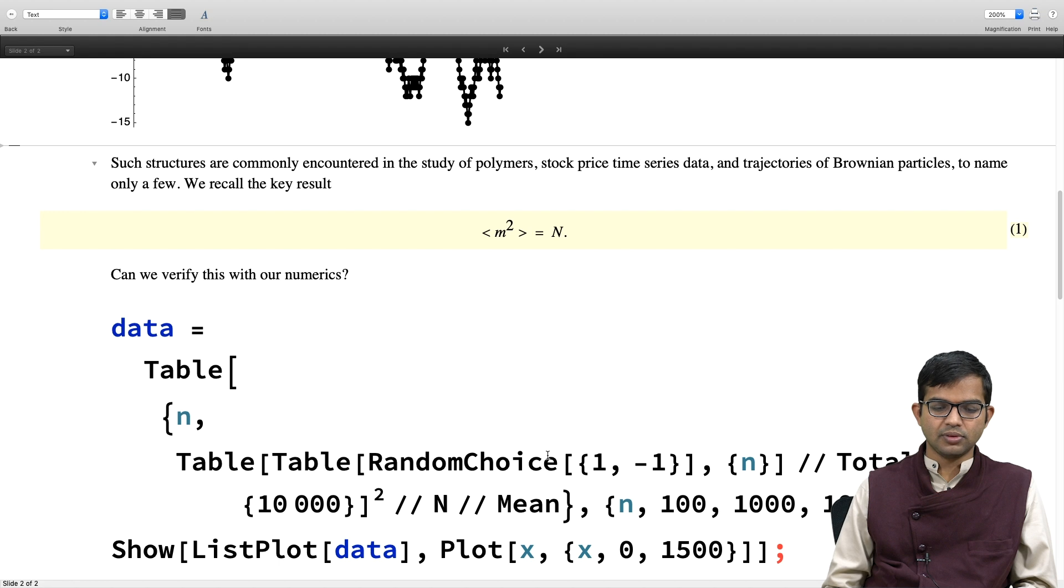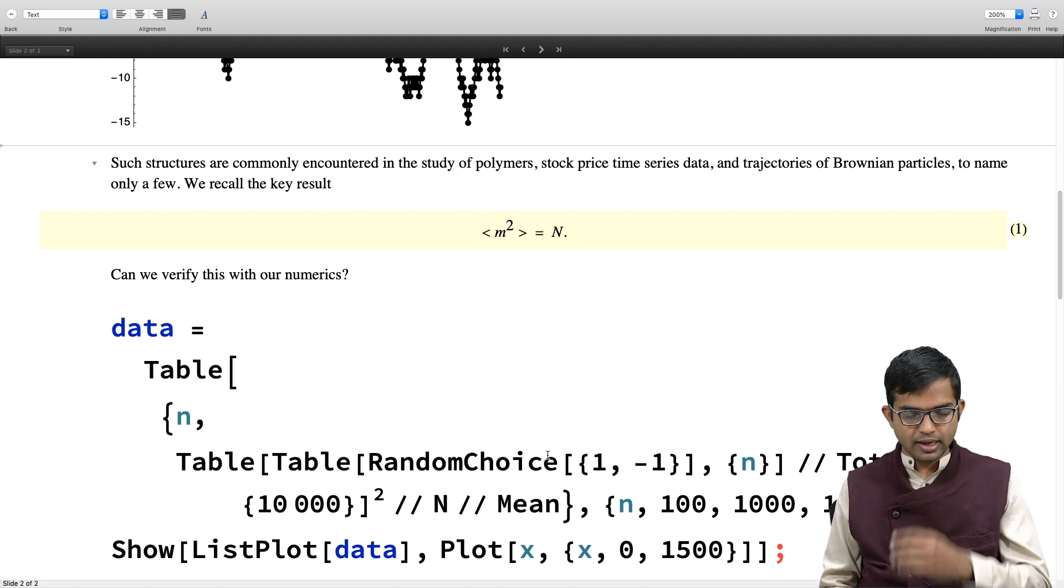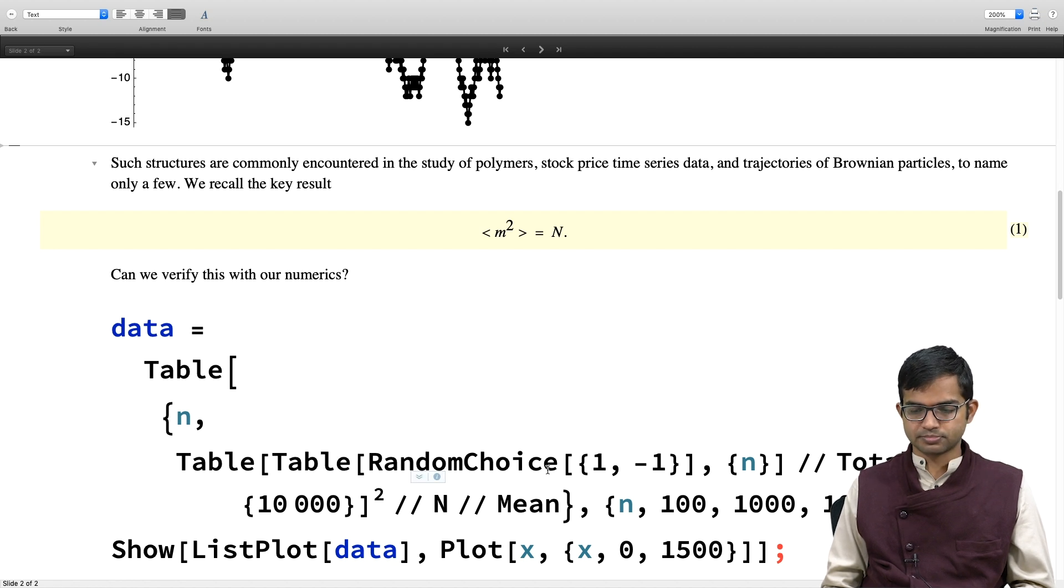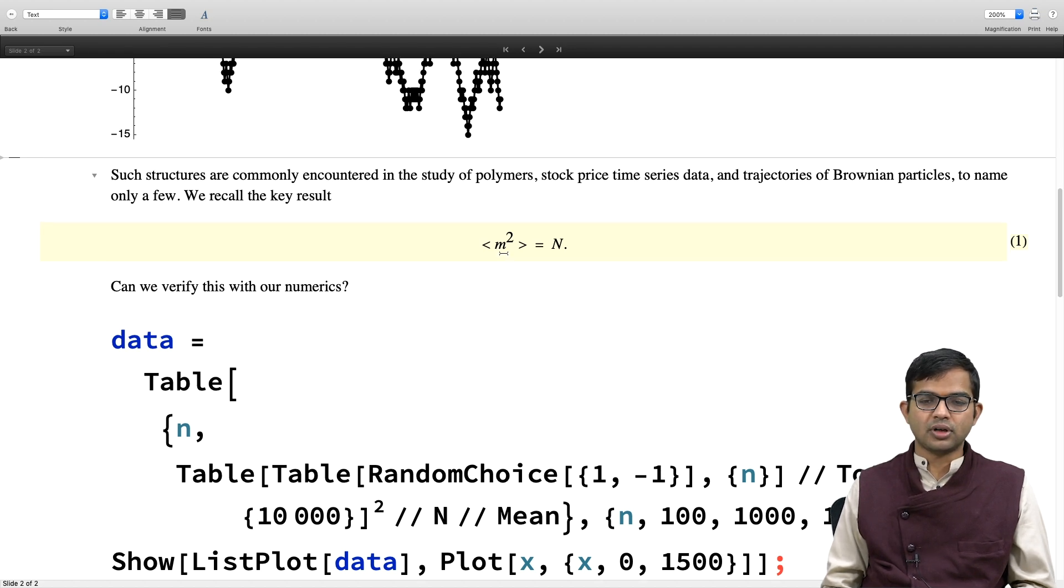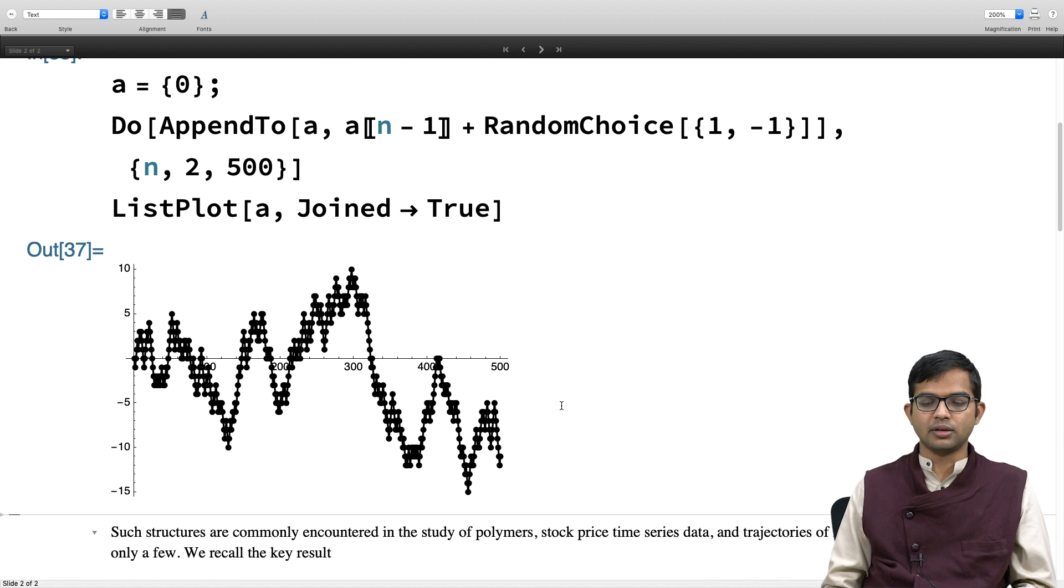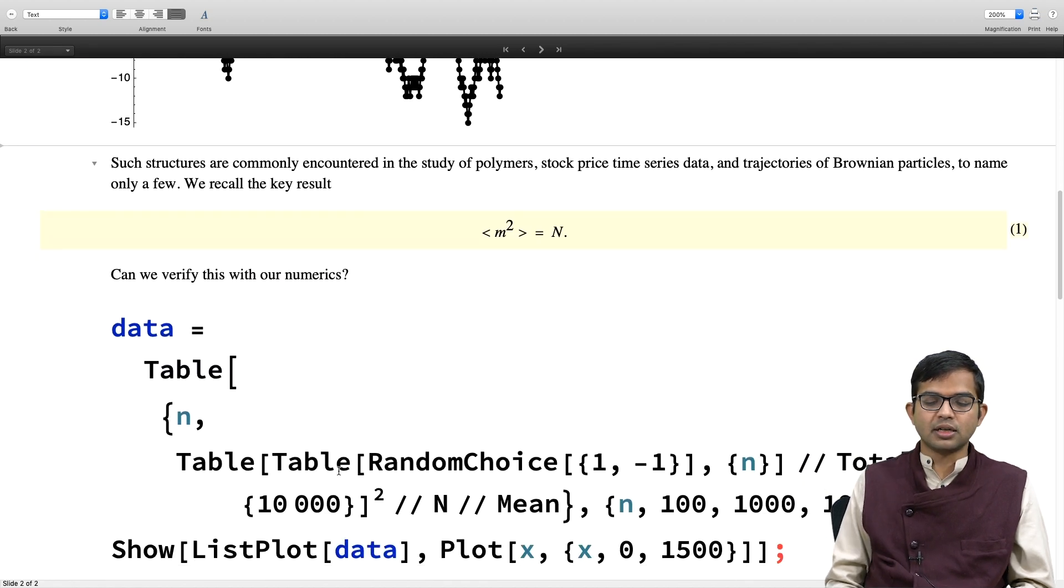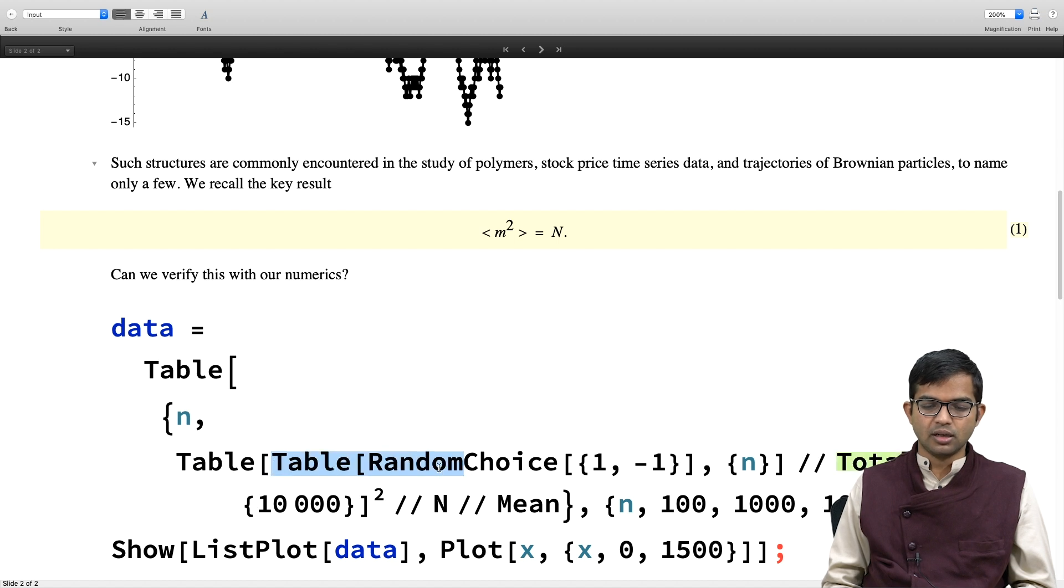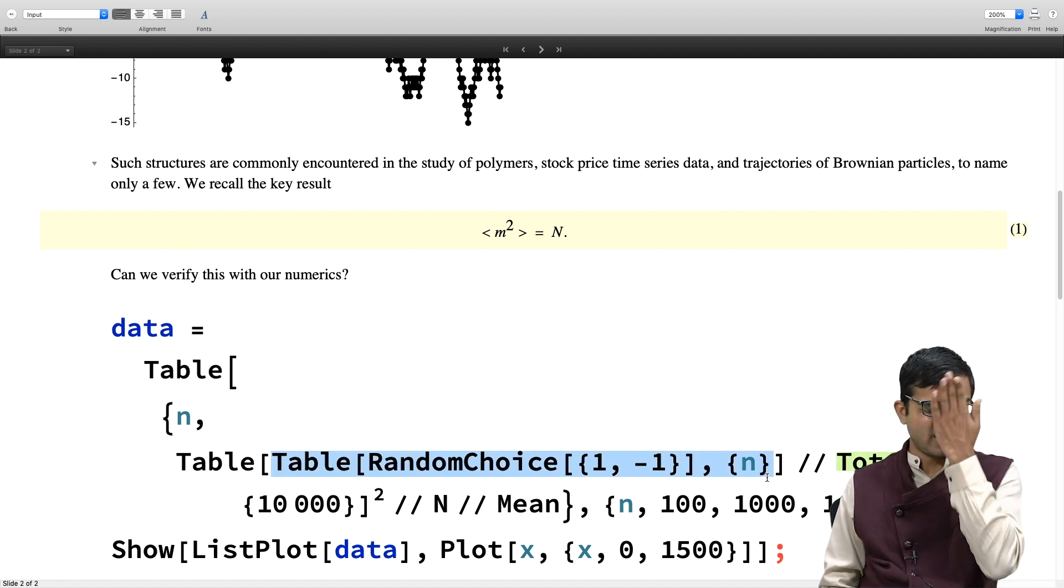Our goal is to verify that average of m squared equals n using numerics. Let me show you the code first, then I'll explain. This time I'm going to generate a table of 1 comma minus 1. I can keep appending or I can just generate a table with information about whether I went right or left.